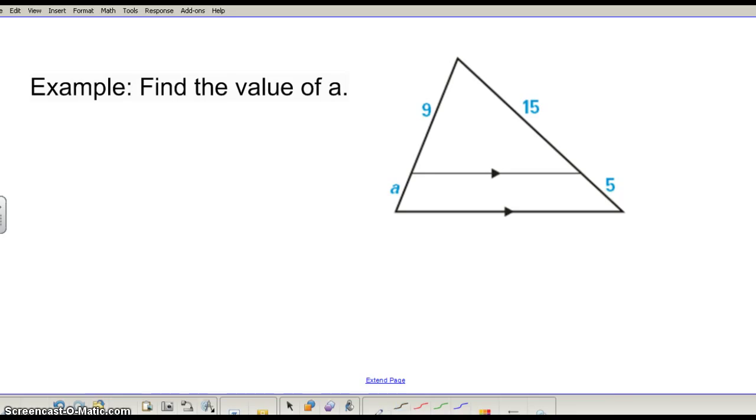So now we're given this figure. Now before what we would do is we would set up a similarity statement, statement of proportionality, but we don't have to do that now. We have a large triangle. And you have a line that's parallel to the side of the triangle. That means it divides the sides of the triangle proportionally. And there's a variety of proportions you could write out. But here I'm going to do 9 is to A.